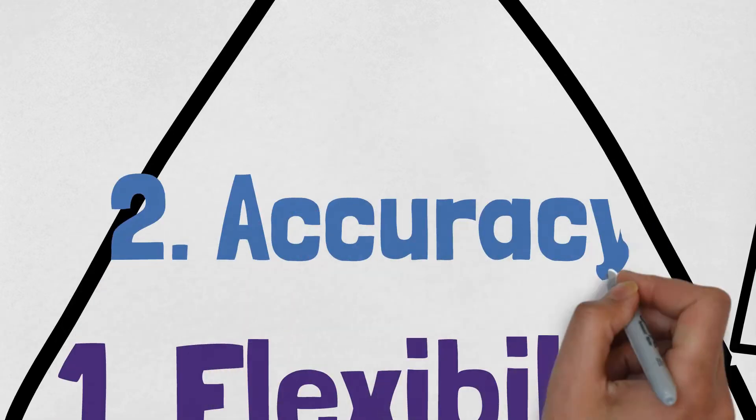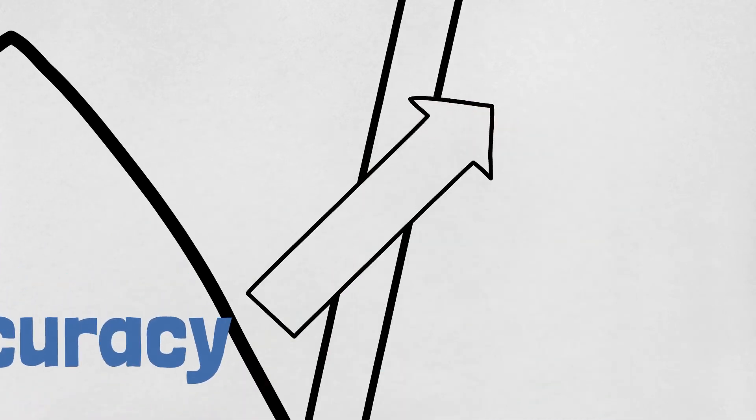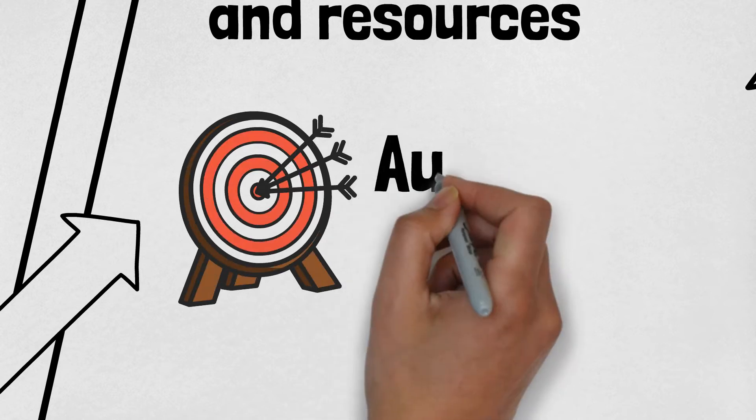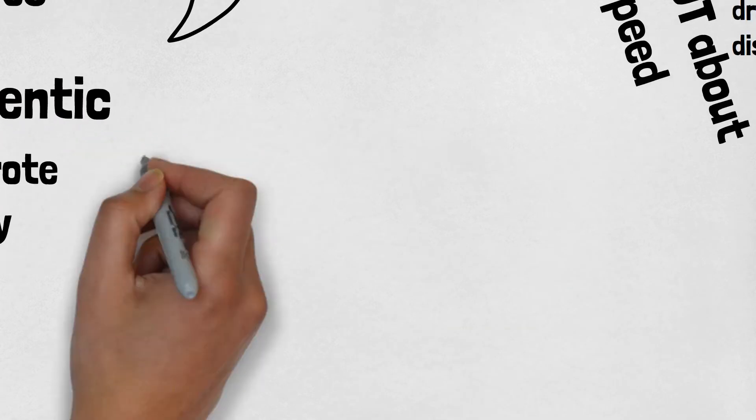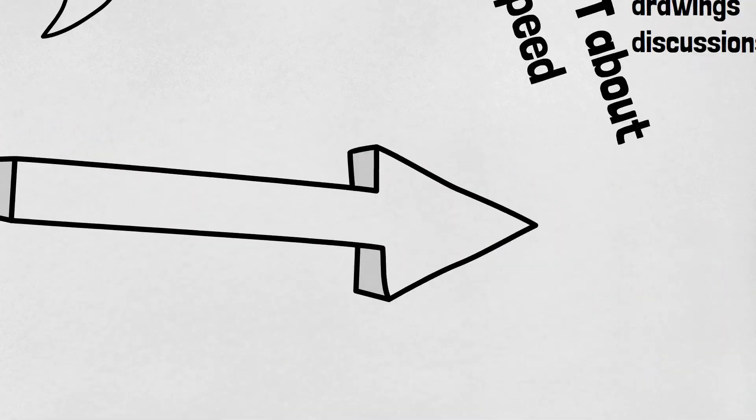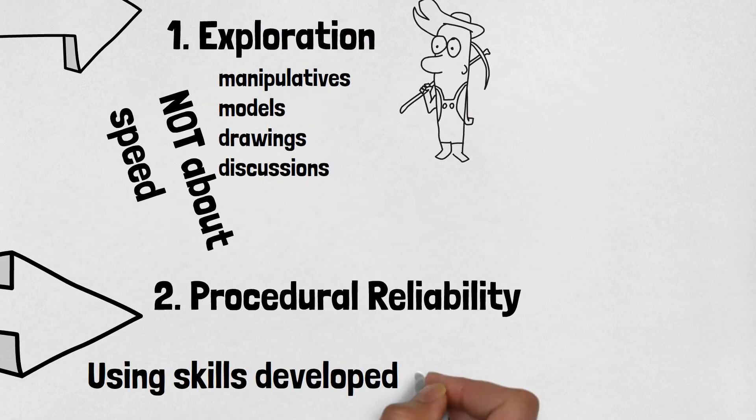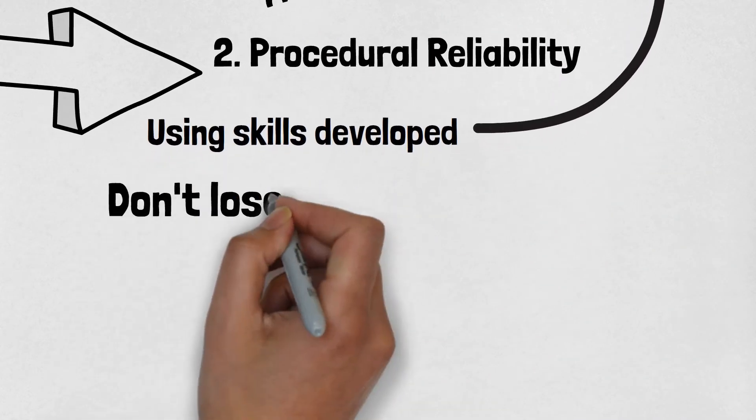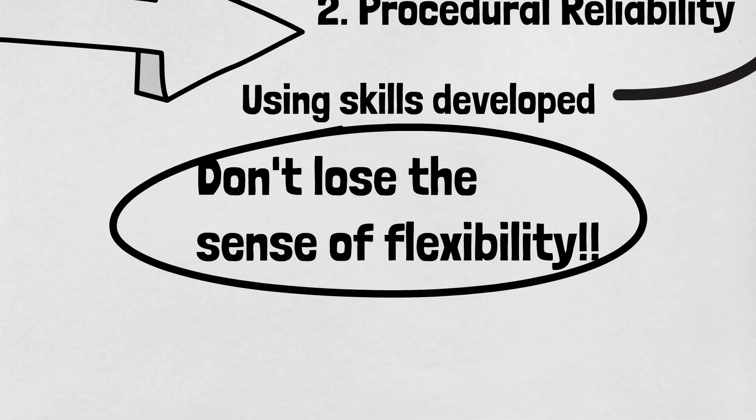The second layer of the pyramid of fluency is accuracy. Though accuracy is, of course, about being accurate or correct, this must be arrived at authentically. It is not about rote memorization. Under the BEST standards, this is defined under procedural reliability. As students work to become procedurally reliable, they will be using the skills developed here in the exploration stage. It is important that students do not lose their sense of flexibility in this stage of fluency.